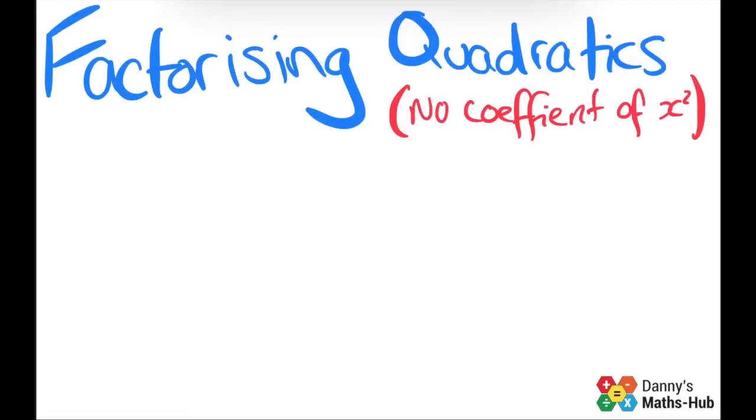Today we're looking at how we factorize quadratics that haven't got a coefficient of x squared. So if we look at number 1, the way we do this, we've got to think of two numbers that multiply together to give us 14, and the same numbers have to add to give us 9.